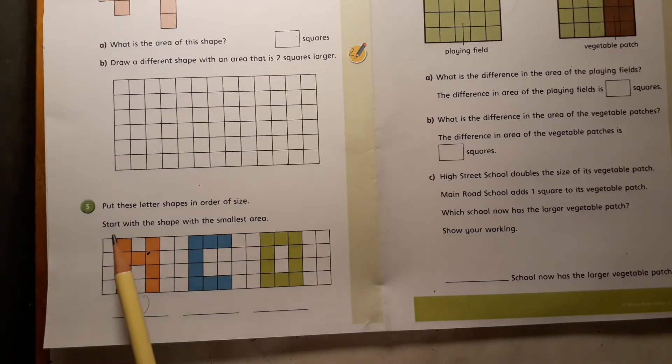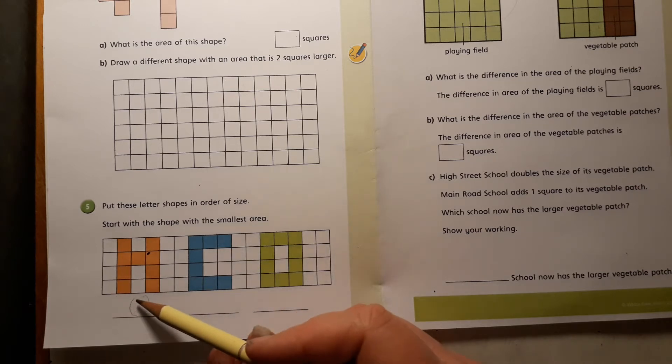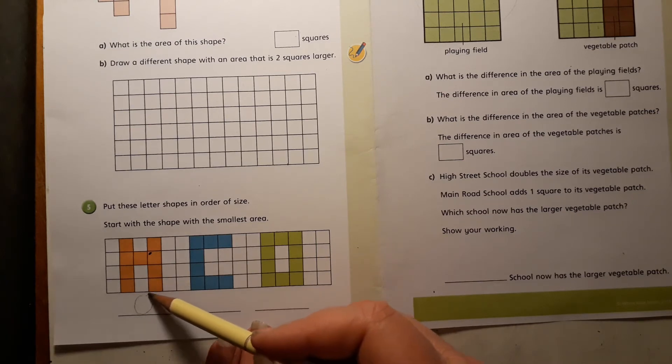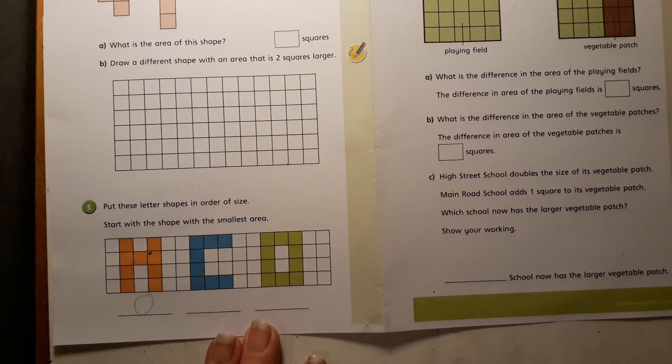And here it says number five, put these letter shapes in order of size, start with the shape with the smallest area. So we've got H, C and O, and if O had the smallest area, we would write our O here.